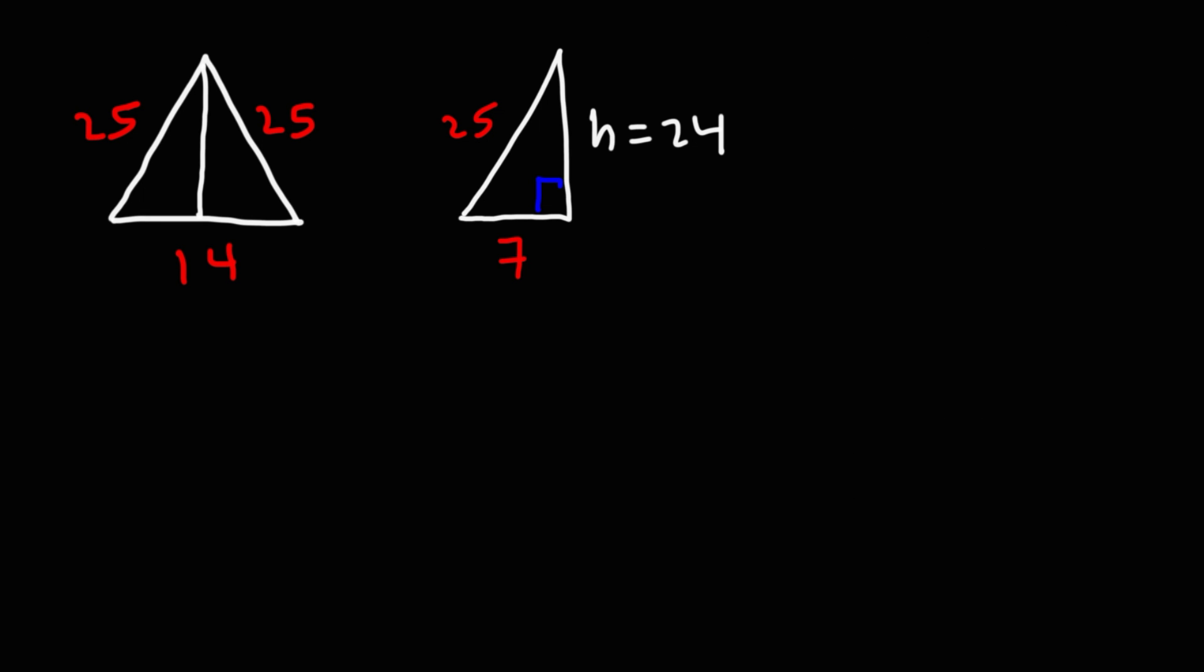So, now that we know the height of the triangle, let's redraw the picture. So, the base is 14. And the height is 24. So, we can go ahead and use this formula. The area is going to be 1 half, base times height. Base is 14. And the height is 24.